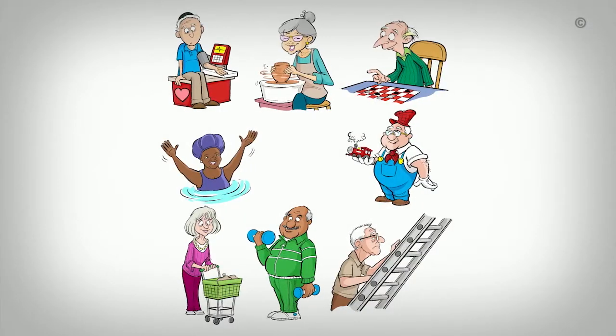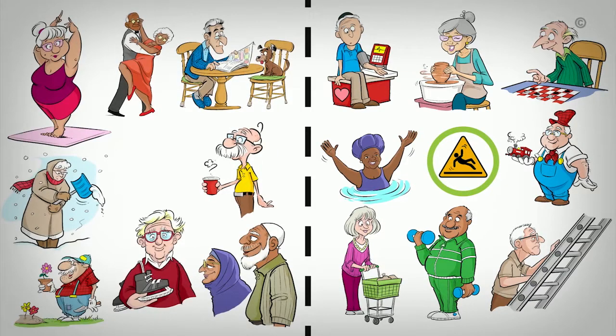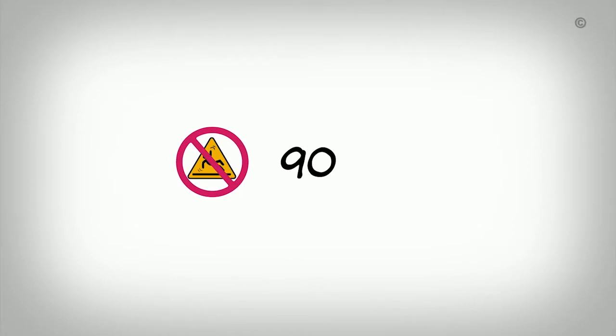Let's say 300 seniors are randomly allocated to an intervention group and another 300 to a control group which receives no intervention. 90 seniors in the control group experience a fracture.